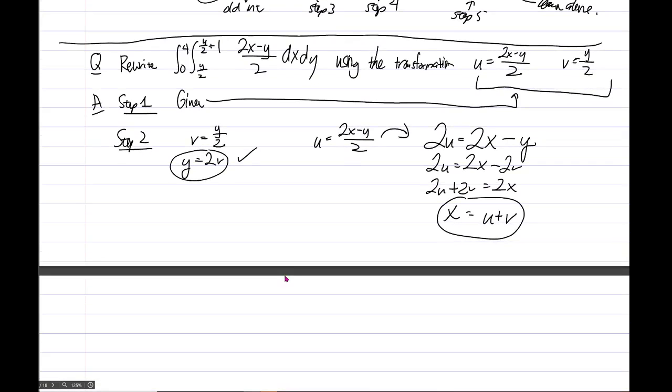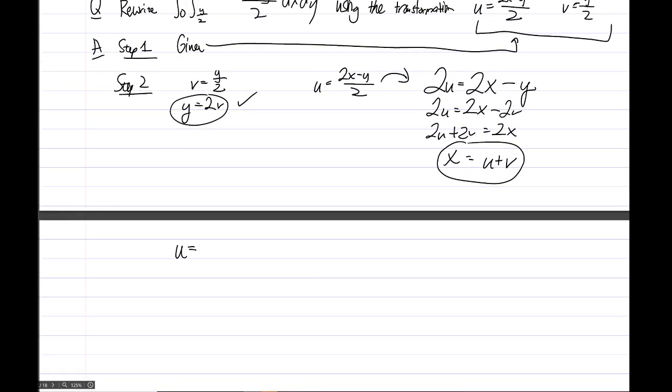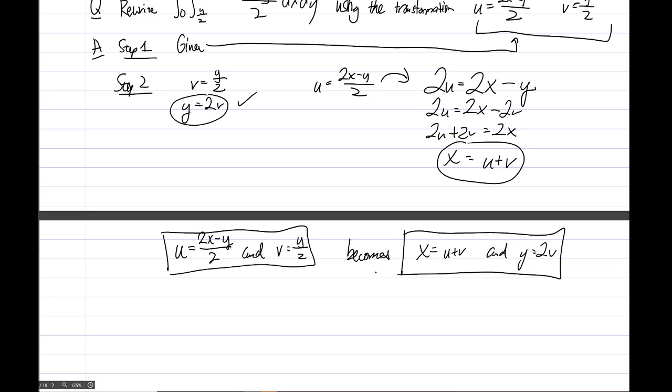The point, maybe to summarize it, maybe the algebra is getting in the way, is that the transformation is written two ways. One is u equals 2x minus y over 2, and v equals y over 2. But it becomes x equals u plus v and y equals 2v. And these are the same. So there's actually no problem writing the transformation either way. We kind of will see uses of both of them. The whole point was to take the transformation written in this format and write it in this format instead. We needed x to be written as a function of u and v, and y to be written as a function of u and v.